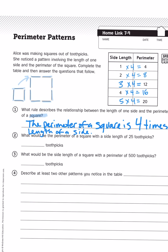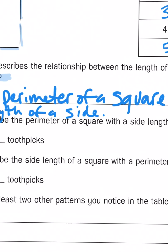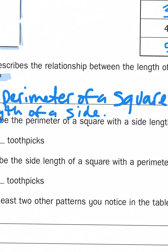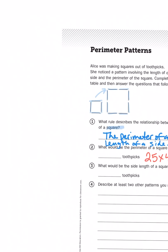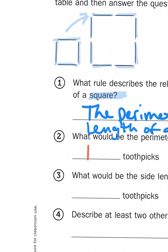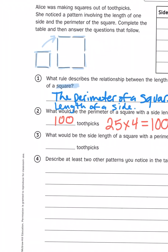For problem number two, it says what would be the perimeter of a square with a side length of 25 toothpicks? Well, to solve that, all I'd have to do is multiply 25 times four. And of course, that's 100. 100 toothpicks, 100 meters, 100 yards, whatever it is that you're measuring, you just multiply by four.